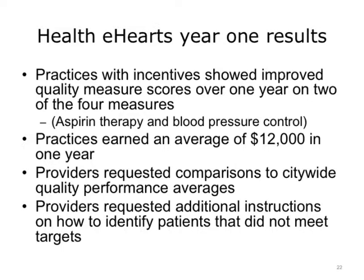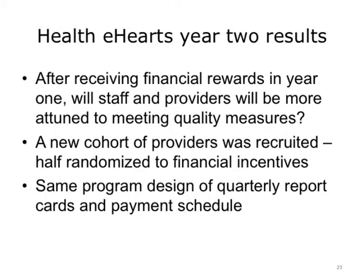In year one, Health eHearts enrolled 400 providers at 82 practices. These practices represented over 170,000 patients, more than 50% of whom were below 200% of the poverty level. As part of a randomized trial, half of the practices were randomized to receive financial incentives. After one year, the practices receiving financial incentive showed some improvement on quality measure scores. The average financial incentive earned per practice in one year was $12,000. Surveys conducted at the end of year one indicated that providers wanted comparisons of their quality data to citywide performance averages. Additionally, provider requests for instructions on how to identify patients that did not meet targets indicated that many practices are not familiar with the EHR Quality Measure Reporting Tool capabilities. Health eHearts has now been extended to a second year, with participants continued in the same randomization arm — financial incentive or quality recognition — and a new cohort of up to 100 providers will be recruited and randomized.